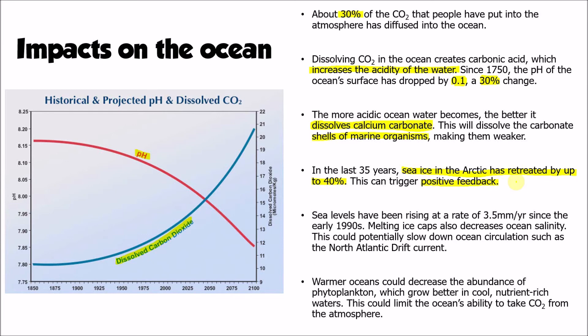Another important consideration for the oceans is the impact of sea level rise. Sea levels are currently rising at a rate of about three and a half millimetres per year. It's expected that by the end of the century sea levels will have risen by somewhere between one and two metres, depending on how much warming we see. We also need to consider how the melting ice from ice caps and glaciers has an impact on ocean salinity. As all that fresh water goes into the ocean, it essentially dilutes it — stopping it being quite as saline.